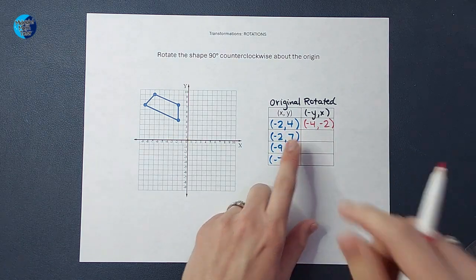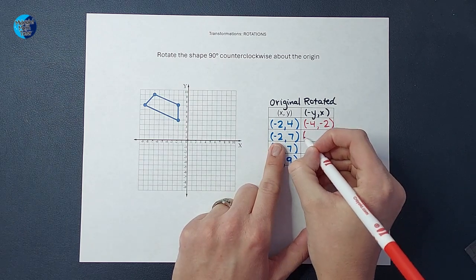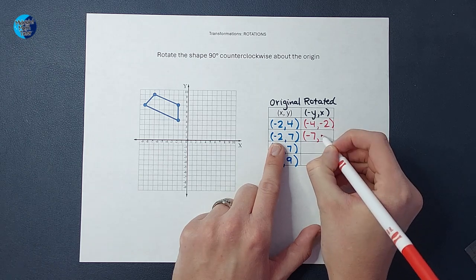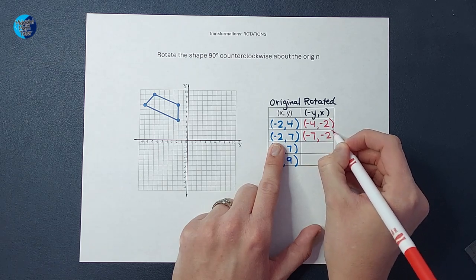Okay, for the rotated shape. Now I'm going to do this one next. So again, I'm going to write y first, change its sign, so I'm going to make it negative, and then write the x second.